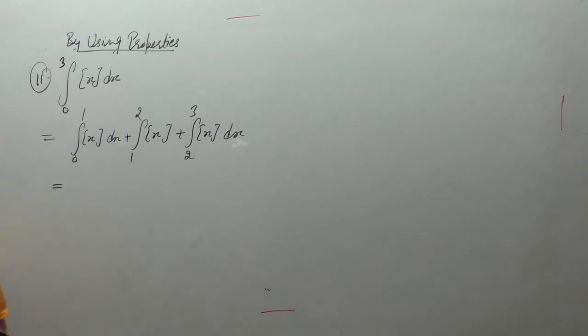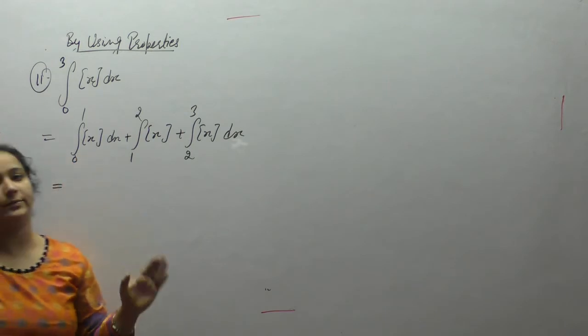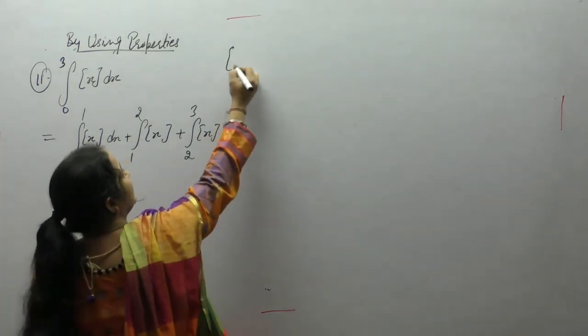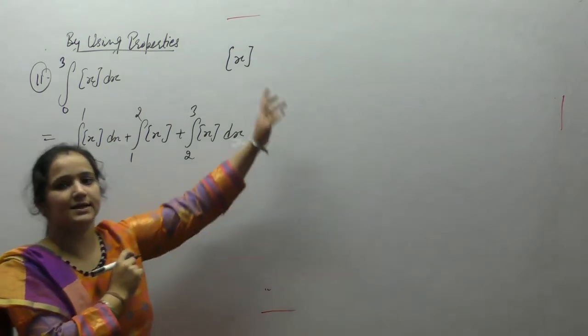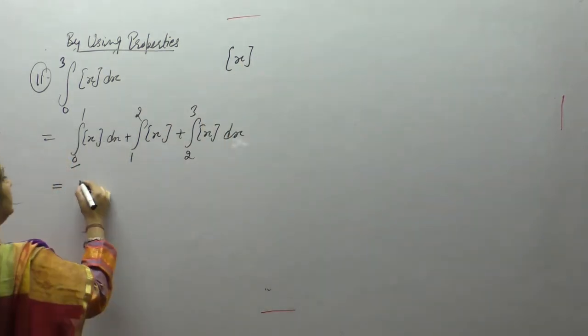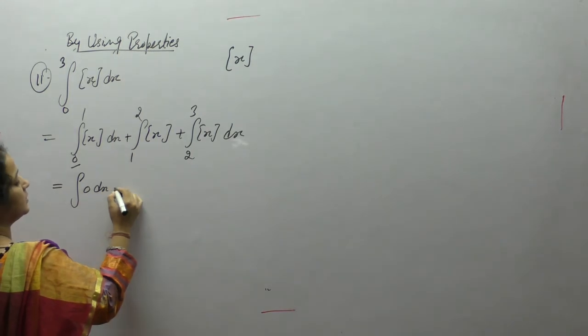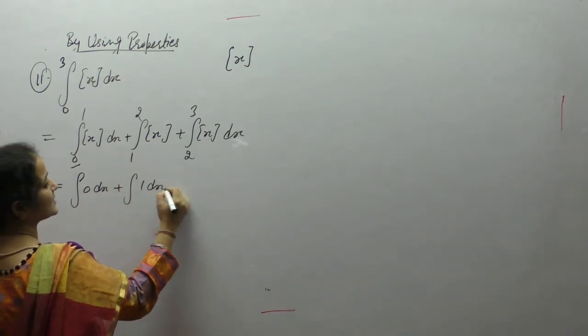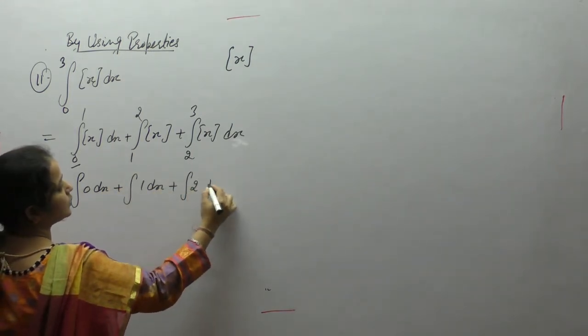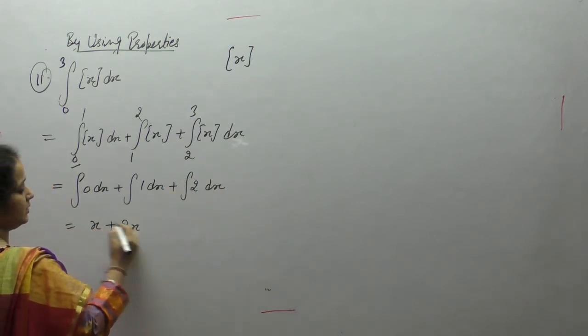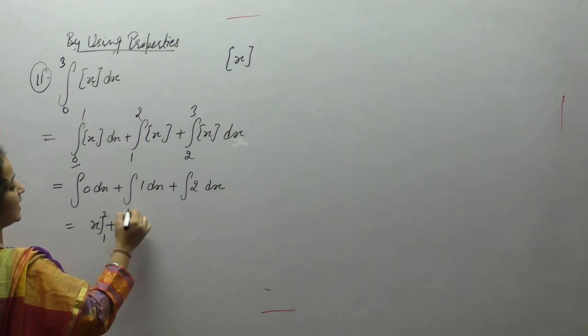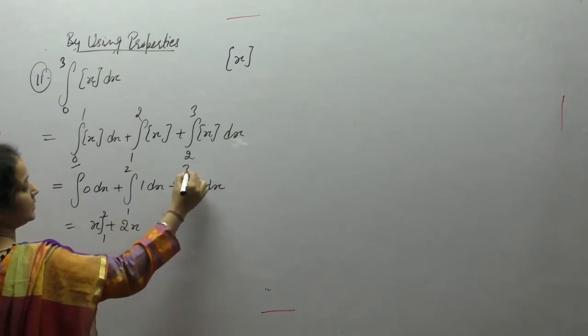Greatest integer value when x is 0 to 1, we take the greatest integer value. See the lower limit: greatest integer of 0 is 0. Plus integral of 1 dx plus integral of 2 dx, limits going from 1 to 2 and 2 to 3.